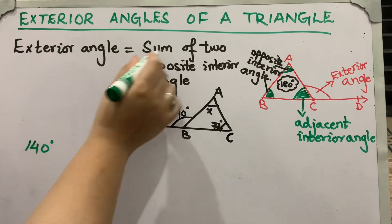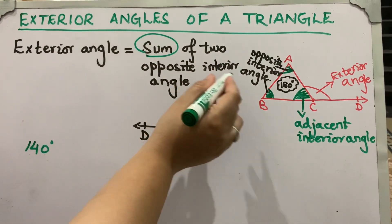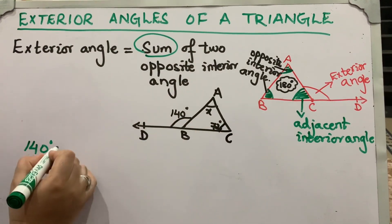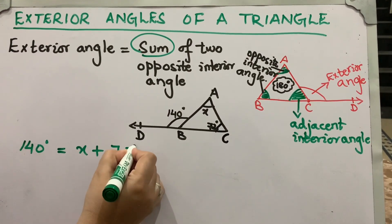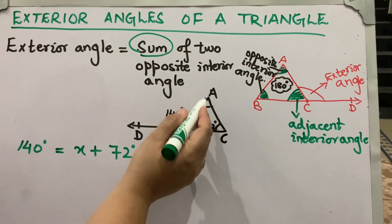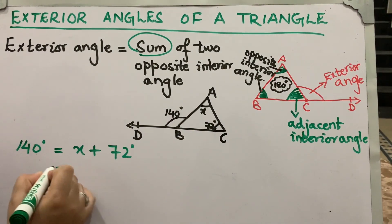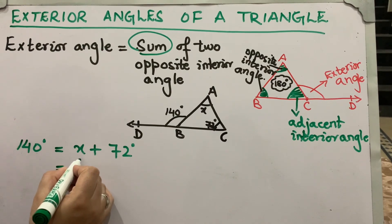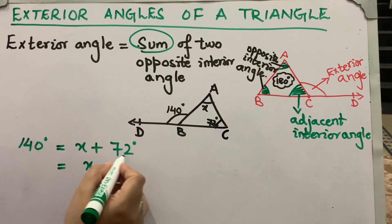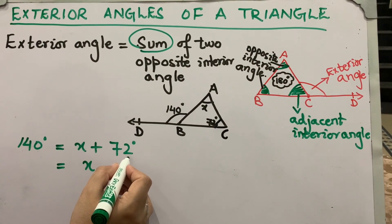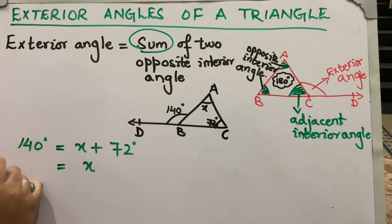Let's put the values in. 140 degrees, the exterior angle, is equal to the sum of two opposite interior angles, which is x plus 72 degrees. So x plus 72 equals 140. When 72 is moved to the other side it will be subtracted from 140 degrees.